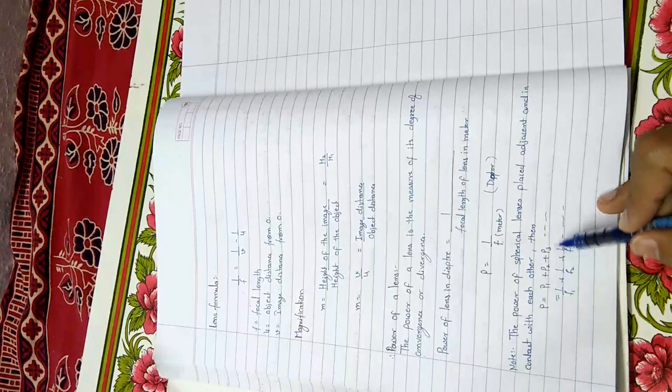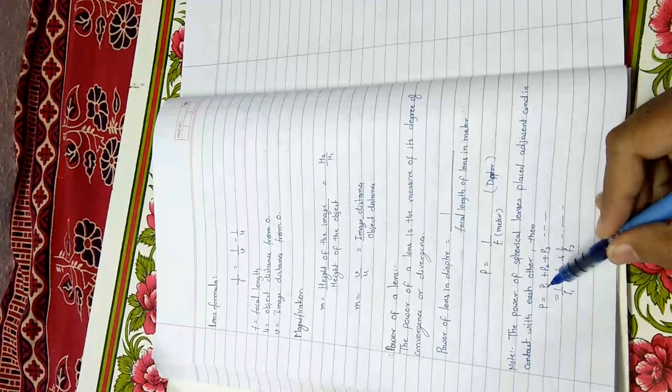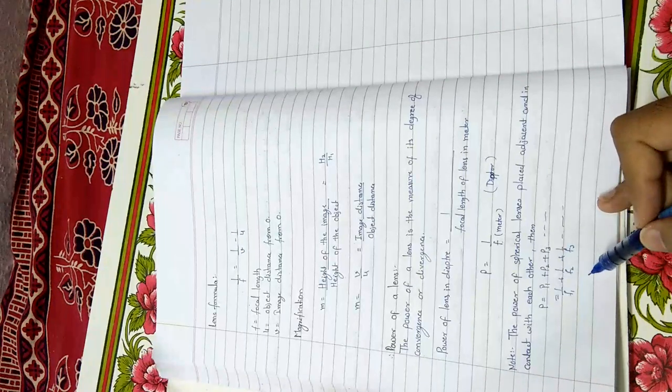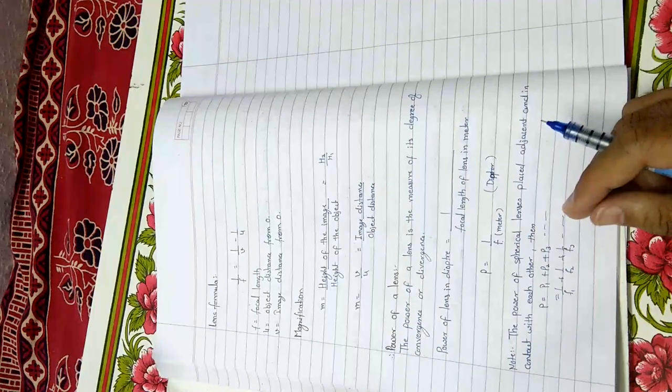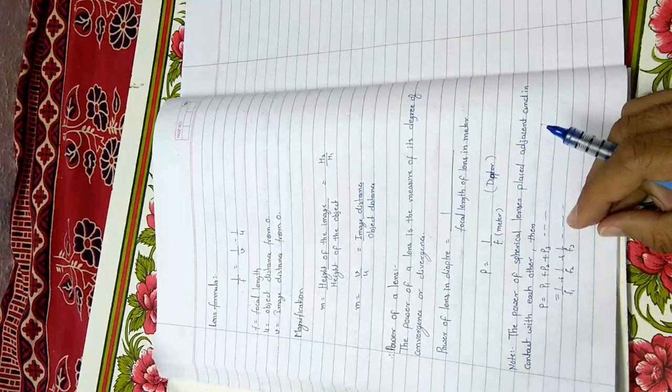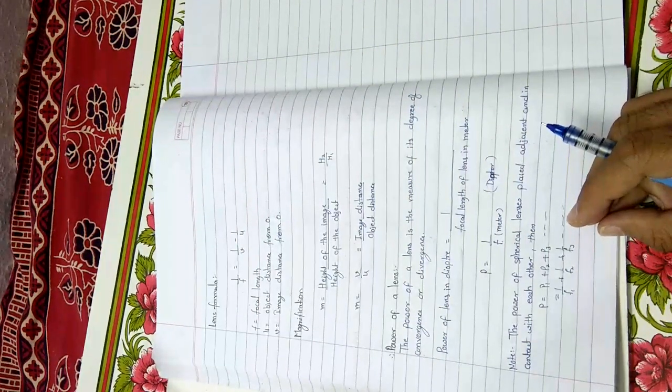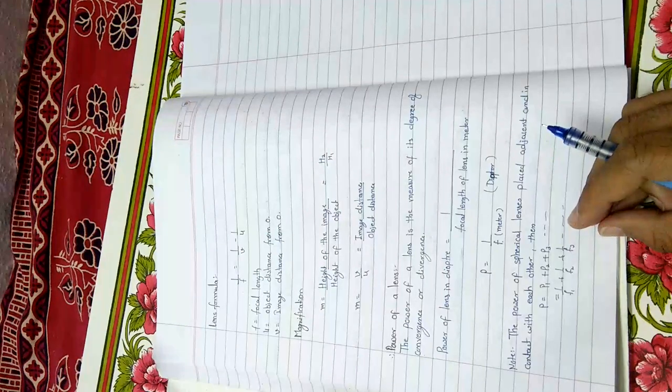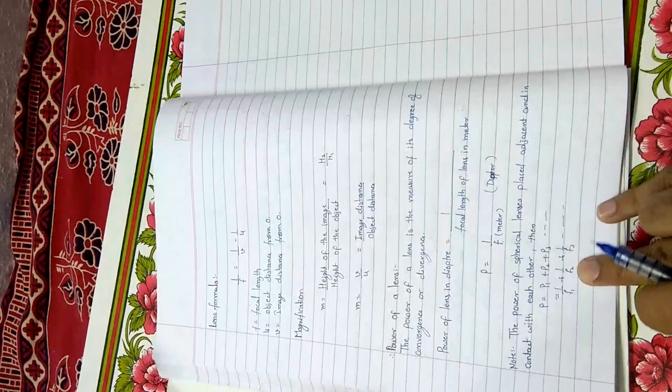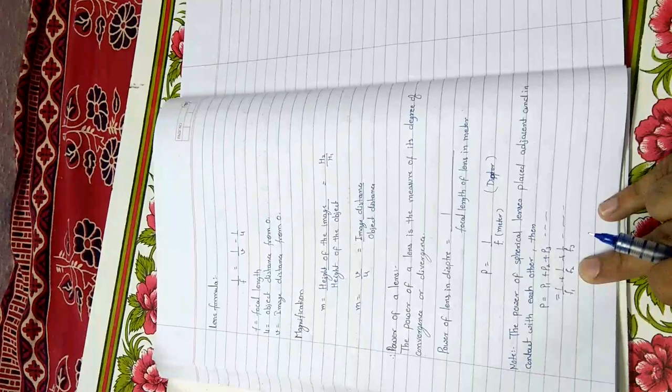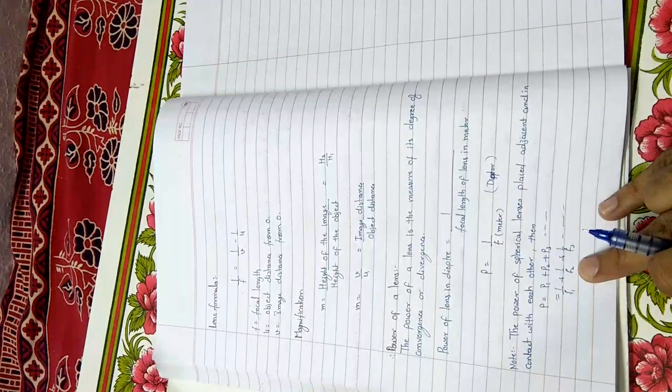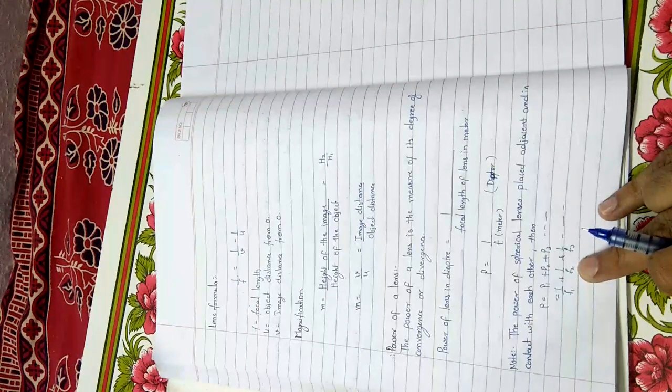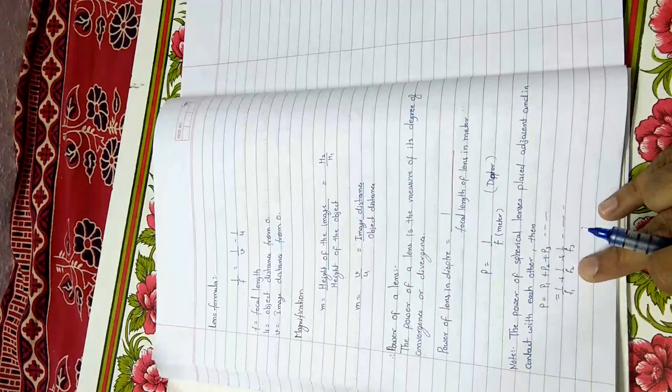Power equals 100/f where f is in centimeters. P1 you can find from 1/f1, P2 from 1/f2, P3 from 1/f3, and so on. But with this, the sign matters: if it's a convex lens then positive, if concave then negative. In this way, we can find the power. So these topics related to refraction we have covered. Thanks for watching the video. Please like and subscribe to my channel.